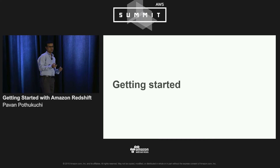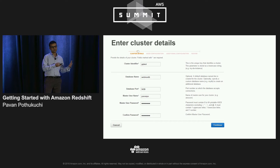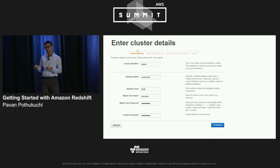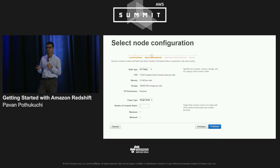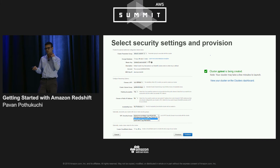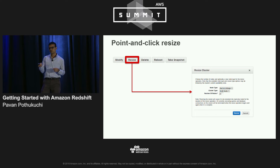Let's talk about how to get started. The provisioning experience on Redshift is very straightforward. In the management console, you specify a cluster identifier, master user, and password. You choose the type and number of nodes. The number of nodes can depend on the amount of data you're bringing in or your performance requirements. Over time you might realize you need fewer or more nodes — your requirements can change based on data growth or performance needs.